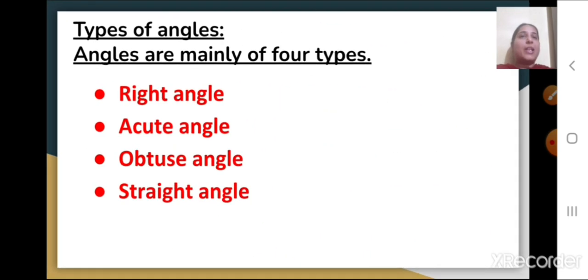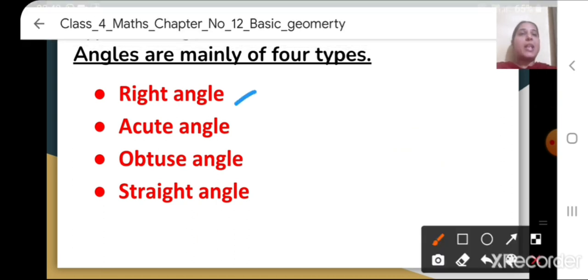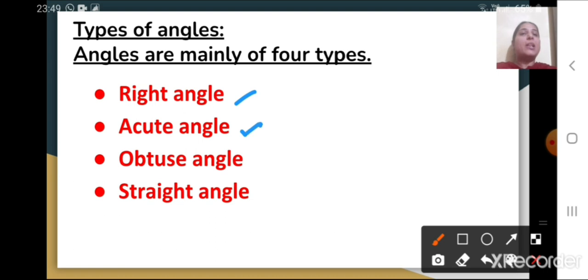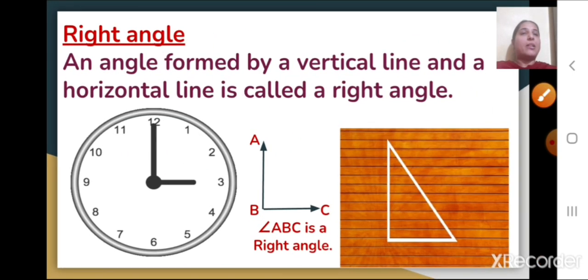Now let us see the types of angles. Angles are mainly of four types: right angle, acute angle, obtuse angle, and straight angle. Let us see one by one about each type.